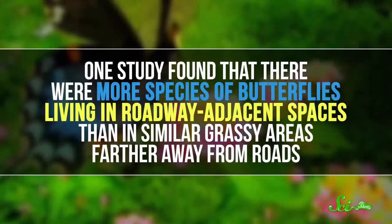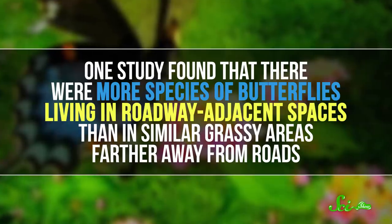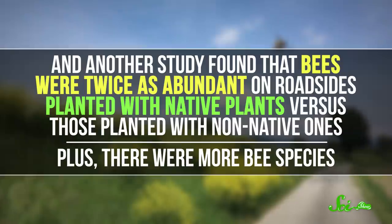For instance, one study found that there were more species of butterflies living in roadway-adjacent spaces than in similar grassy areas farther away from the roads. And another study found that bees were twice as abundant on roadsides planted with native plants, versus those planted with non-native ones.